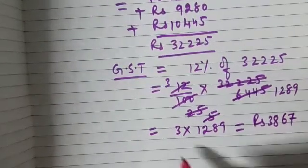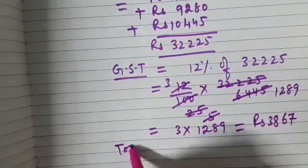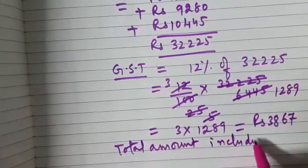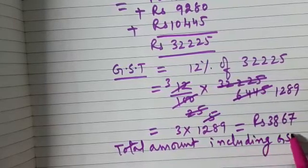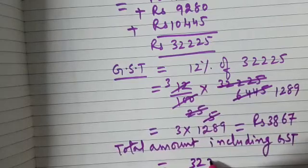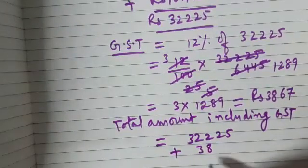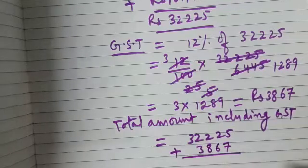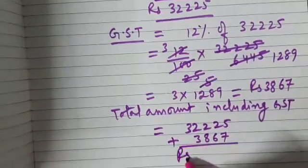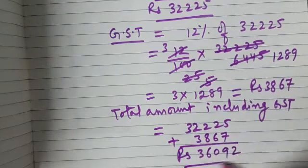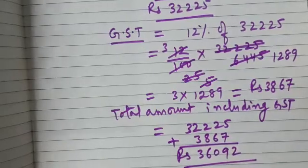So the total amount including GST will be equal to 32,225 plus 3,867. Adding these, the total amount which is to be paid comes out to be Rs. 36,092. I hope the question is clear. It was a simple question. Thank you.